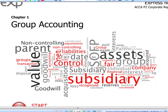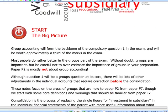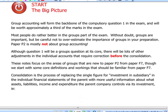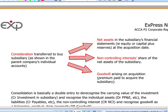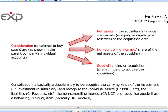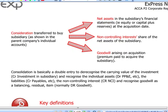Let's start by reminding ourselves what consolidation is and basically why we prepare group accounts. Consolidation is simply the process of replacing the cost of the investment or consideration paid to acquire a subsidiary — which is shown in the parent's individual financial statements — and replacing this with the net assets of the subsidiary, the non-controlling interest share in the net assets, and the goodwill arising on consolidation.